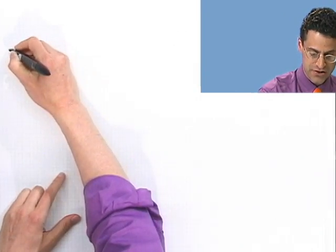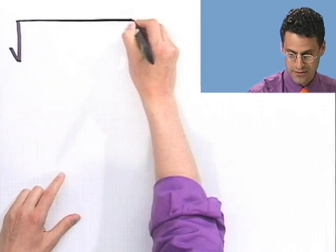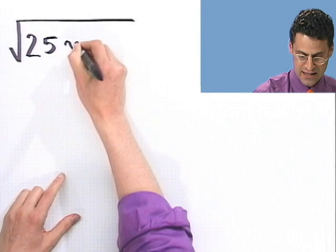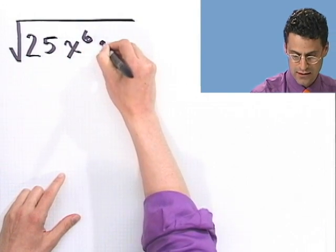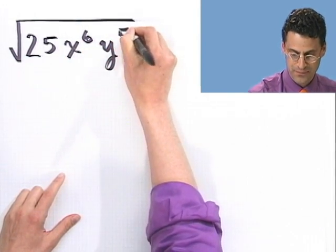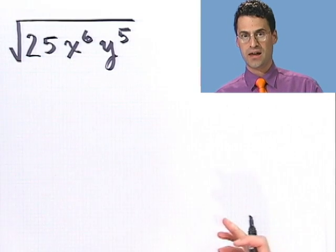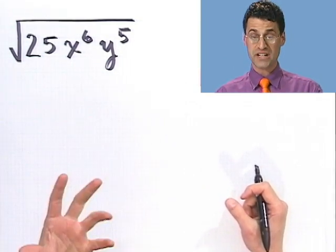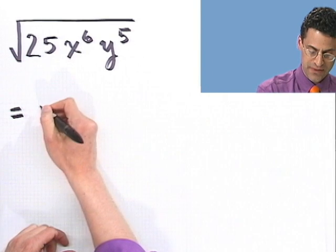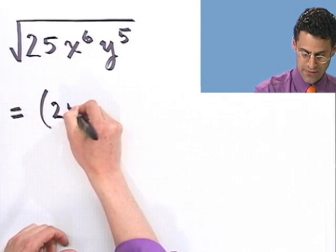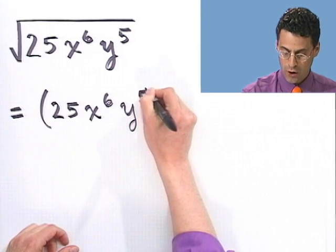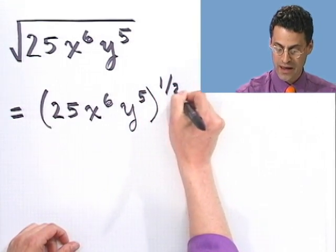Let's take a look at the square root — a big square root — of 25 times x to the sixth times y to the fifth. Let's see how far we can simplify that. The first thing is to rewrite this as 25 x to the sixth y to the fifth, all raised to the 1/2 power.